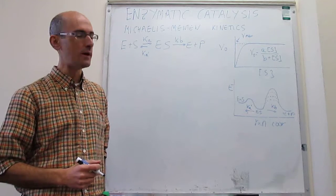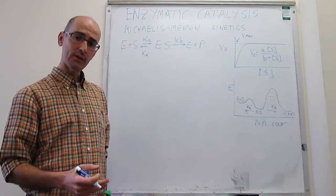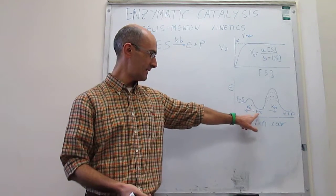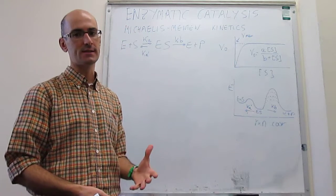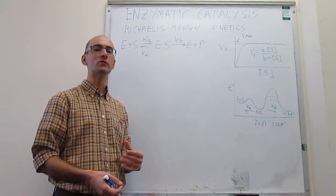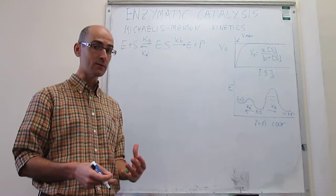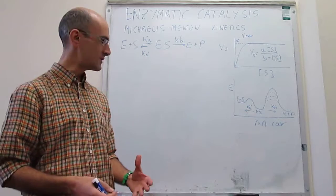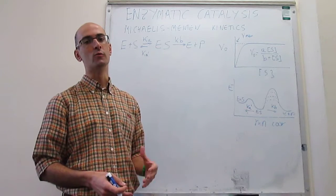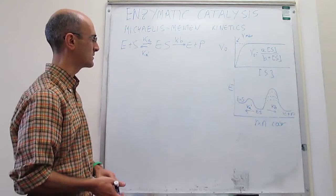So what you can do in that case is assume that the ES intermediate reaches steady state. The conditions for a steady state of an intermediate are far more common than those for a pre-equilibrium case, so this approach is much more applicable to more enzyme-catalyzed reactions.